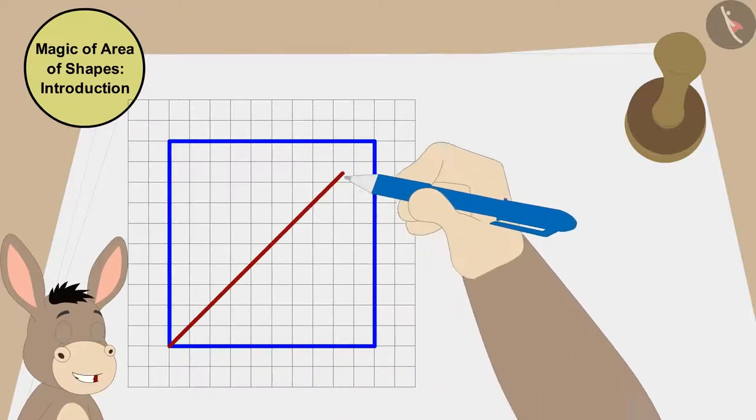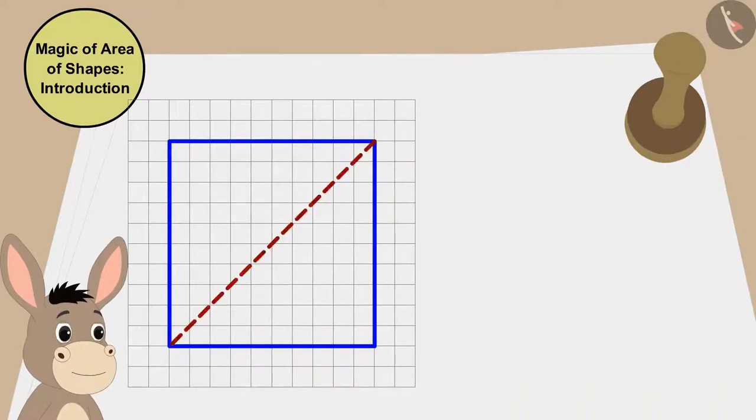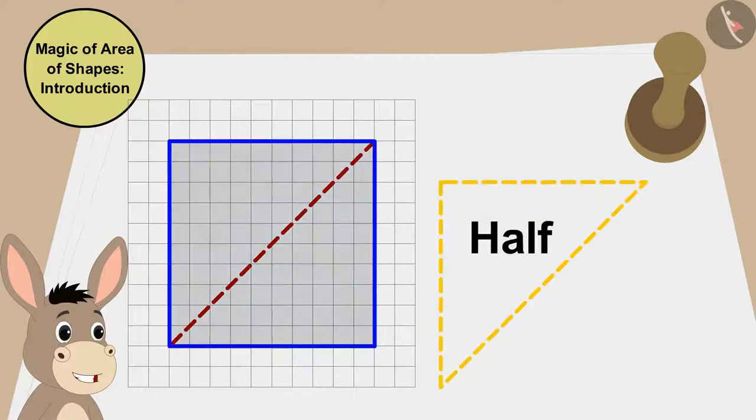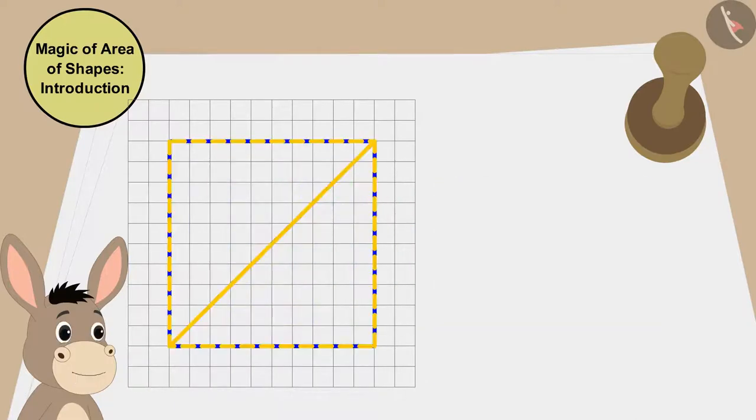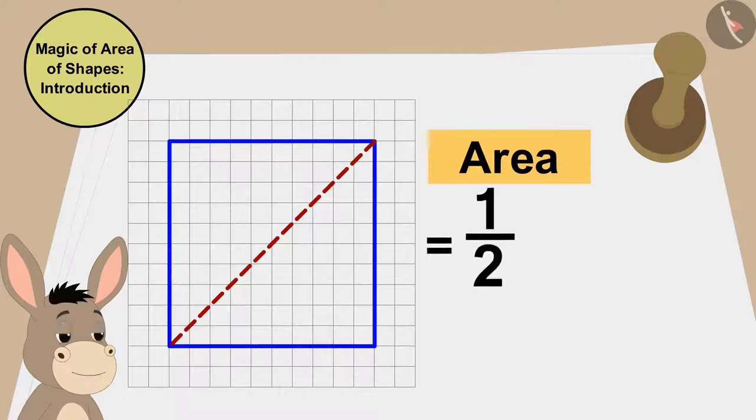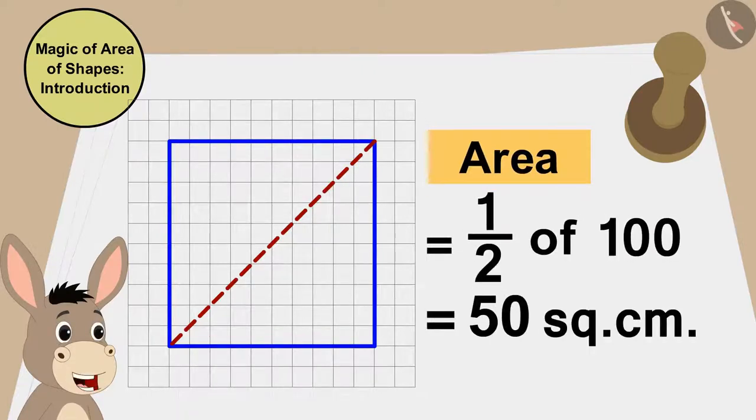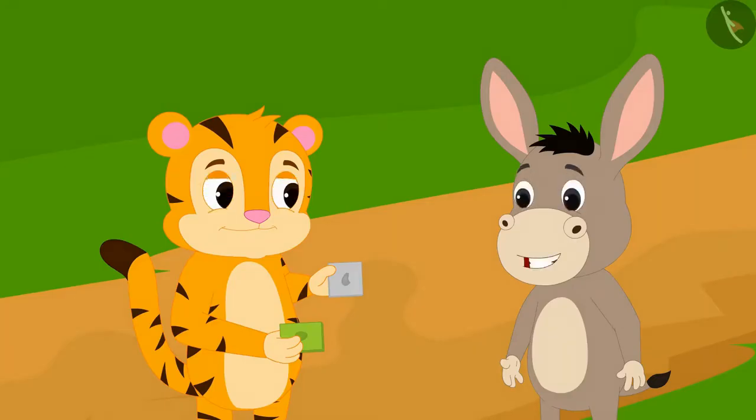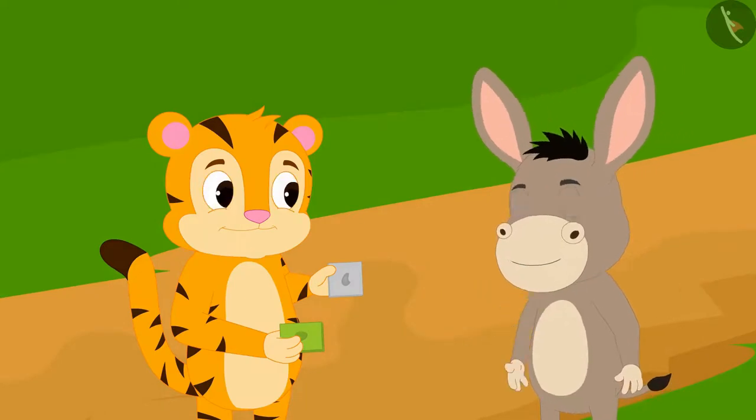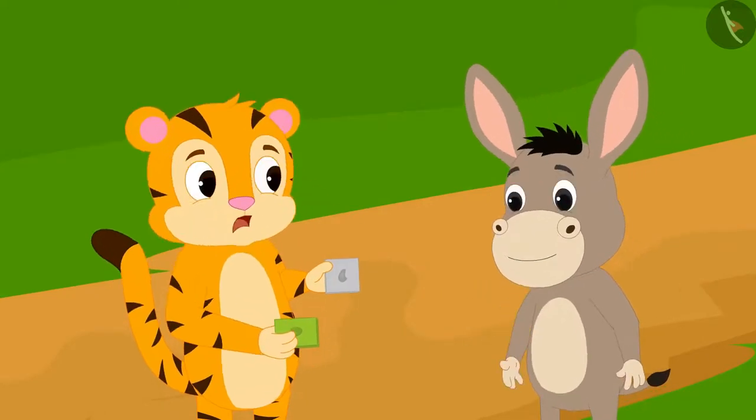If I draw a straight line like this, I will divide this cashew barfi into two equal triangles. And because both triangles are half of this cashew barfi, both of the areas of the triangles will be half or 50 square centimeters of the area of cashew barfi. Bholla told Sher Khan. Sher Khan was shocked.